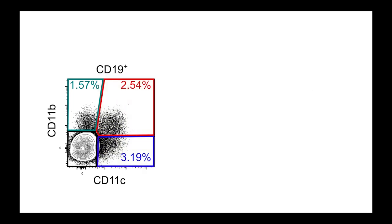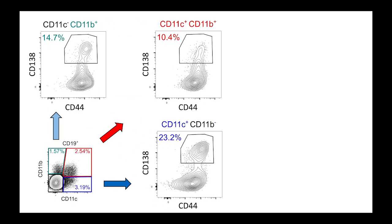The ABC-like subsets differed in the degree to which they expressed the plasmoblast marker CD138, with CD11C single positives containing the most CD138-expressing cells.